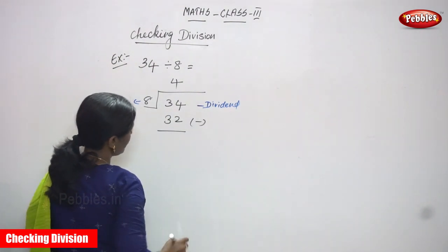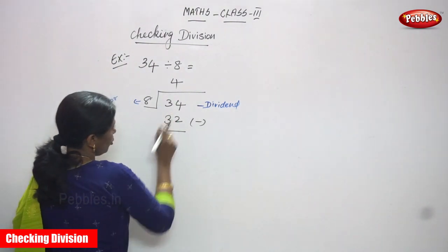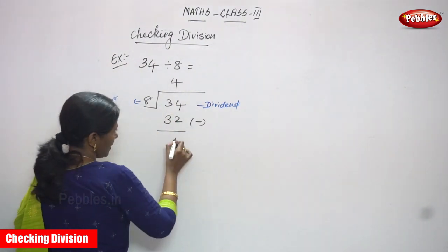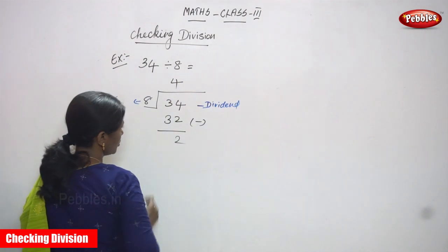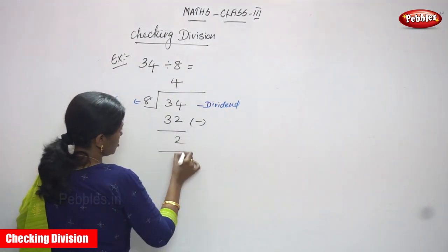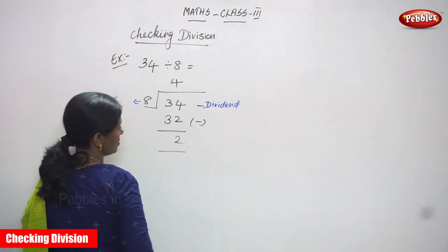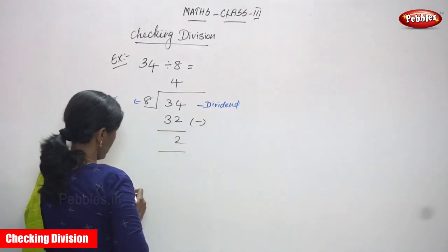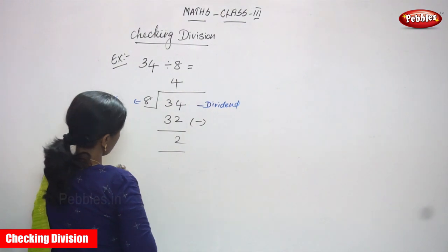Now you are going to subtract. So 34 minus 32: 4 minus 2 gives you 2, and 3 minus 3 gives you 0. So no need to write the zero again.